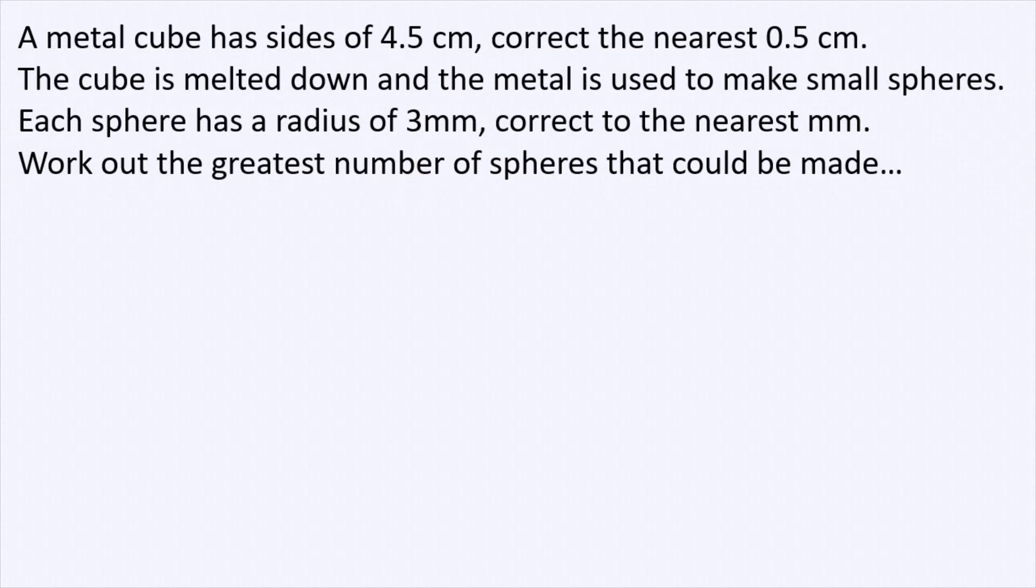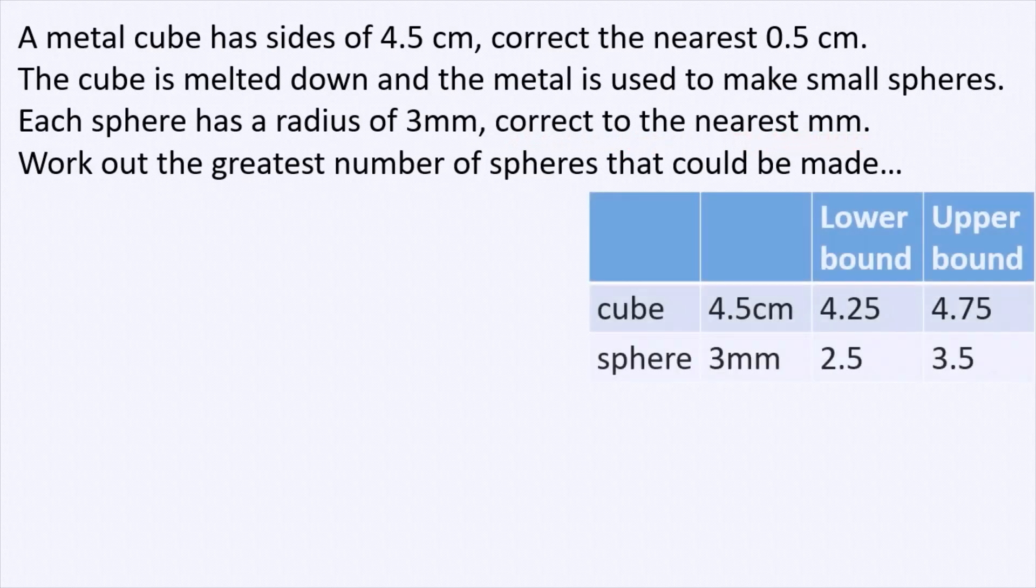In order to get this question right, we have to look at the wording. The wording says two key statements: the side is correct to the nearest 0.5 centimeters and the radius is correct to the nearest millimeter. Therefore we make this table showing the lower bound and the upper bound for the side of the cube and the lower bound and the upper bound for the radius of the sphere.